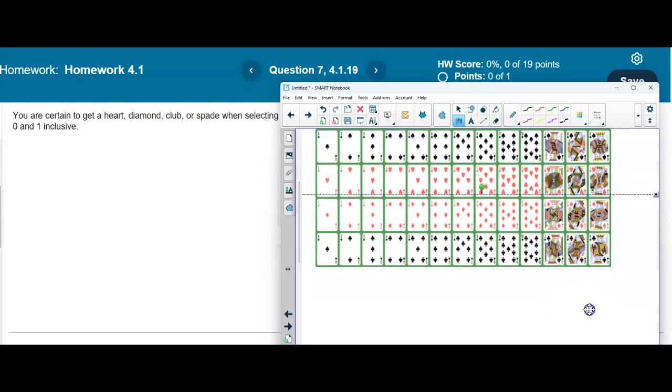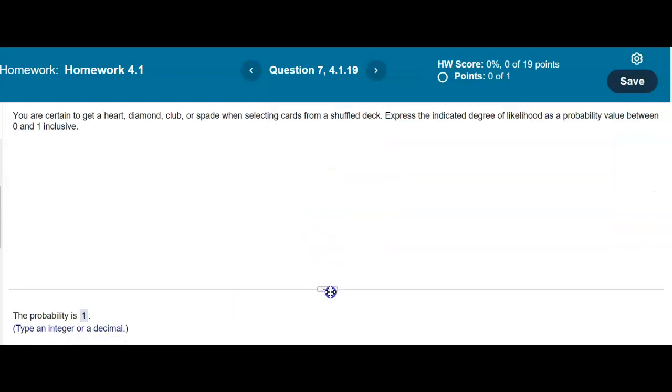So that means you have a probability of getting 52 over 52, which again gives you the certainty of 1. Therefore our answer is that the probability is 1.